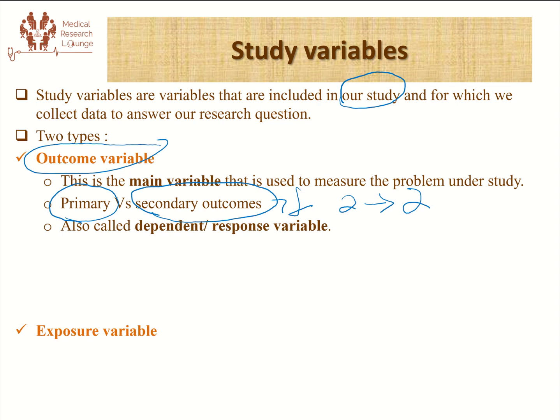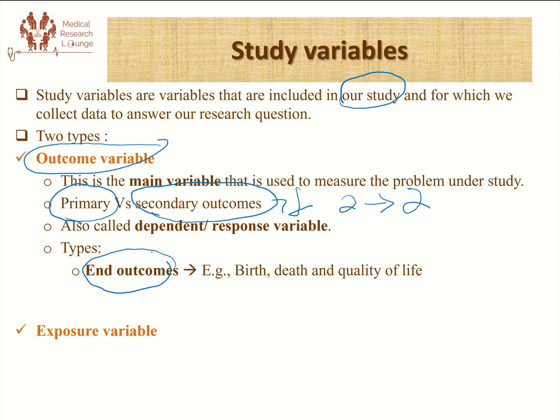In different research, you might have encountered the terms dependent or response variable — these are alternate terms for outcome variables. There are two types of outcome variables. The first is end outcomes or major outcomes — these are the major ultimate outcomes that any research would like to answer: birth, death, and quality of life. Because every research at the end of the day wants to improve birth outcomes, prevent death, or improve quality of life. These are the three major ultimate outcomes considered to be end outcomes in medical research.